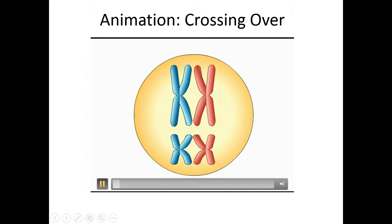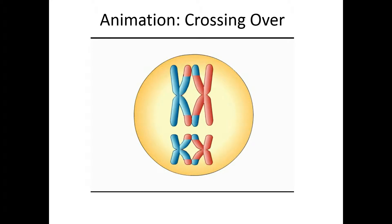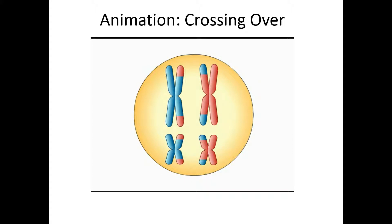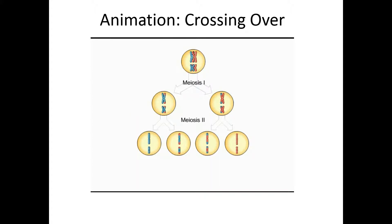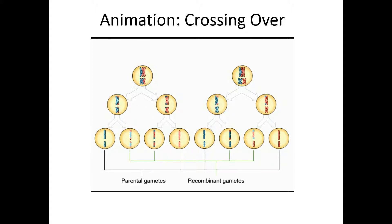During prophase I of meiosis, homologous chromosomes pair up very closely, and corresponding parts of two non-sister chromatids may trade places. This process of crossing over creates variation by producing chromosomes that combine the genes inherited from two parents, producing a total of four genetically different gametes. In humans, crossover events happen an average of two or three times per chromosome pair, greatly increasing variation among eggs and sperm. Crossing over produces some parental gametes and some recombinant gametes with a mixture of genes from both sets of chromosomes.